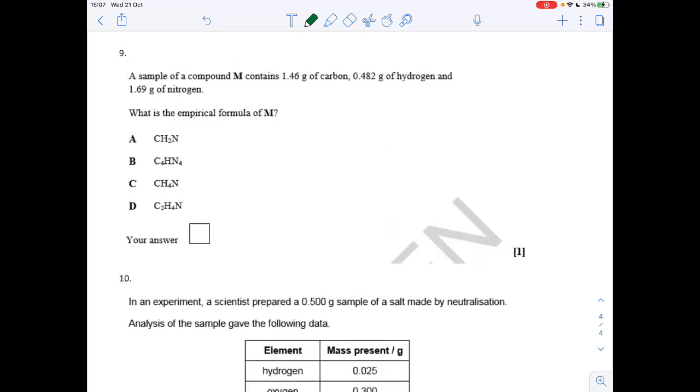Question 9, I'm not going to bore you with the method. It's just the same as before. So mass over relative atomic mass to get the moles, divide by the smallest, multiply out till whole if you need to. The answer anyway was C.